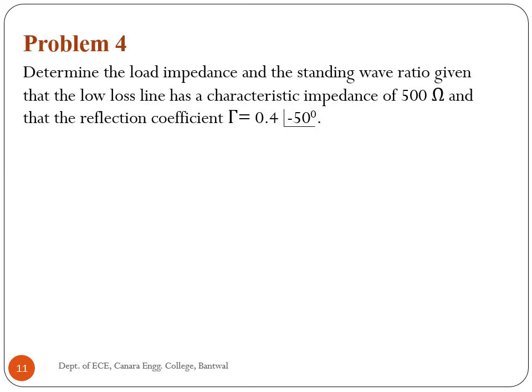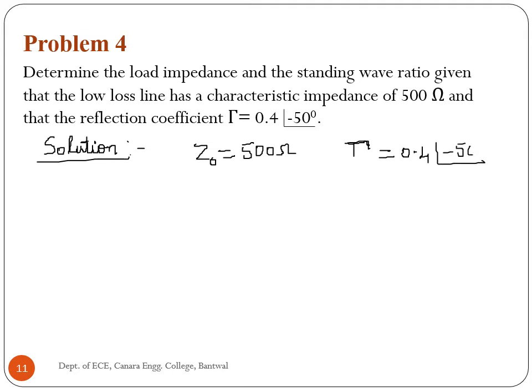Fourth problem: determine the load impedance and the standing wave ratio, given that a low-loss line has a characteristic impedance of 500 ohm and a reflection coefficient of 0.4 angle minus 50 degrees. We need to find ZL and the standing wave ratio.